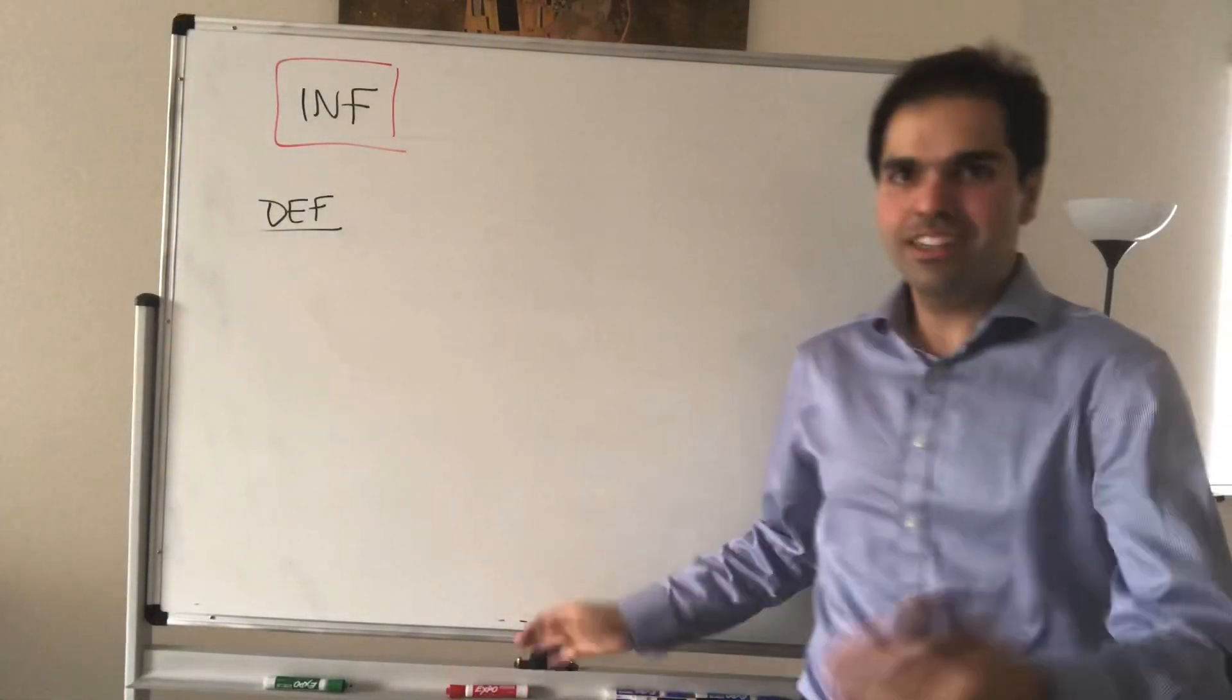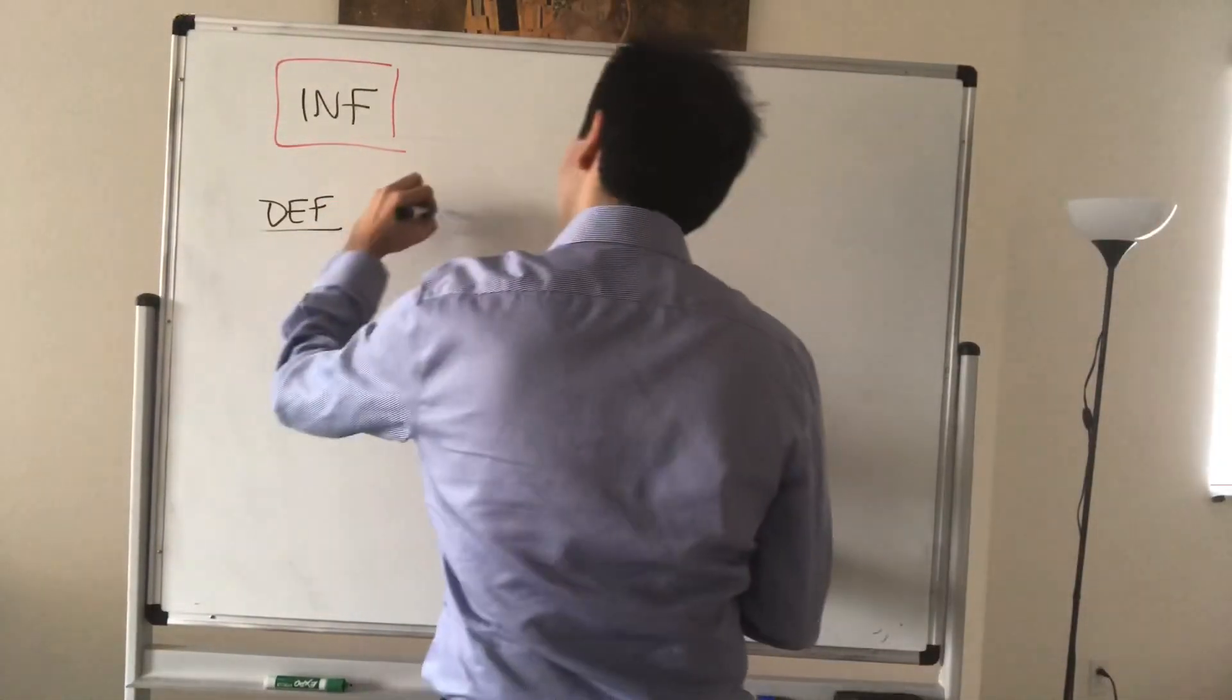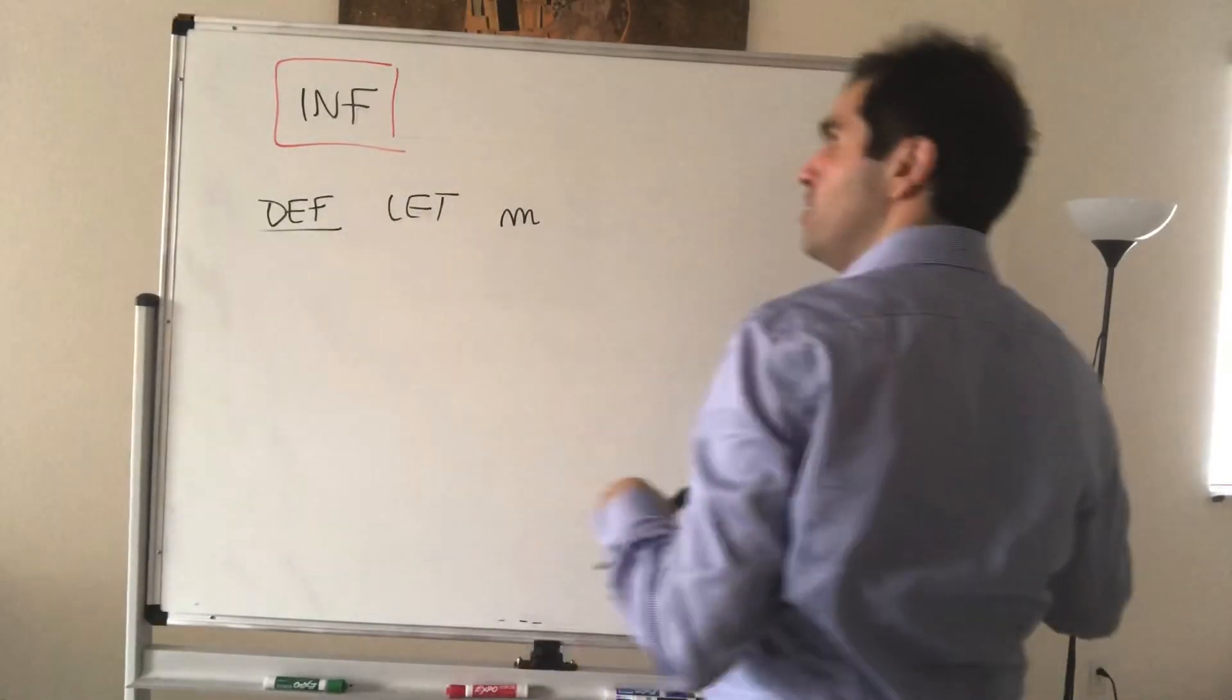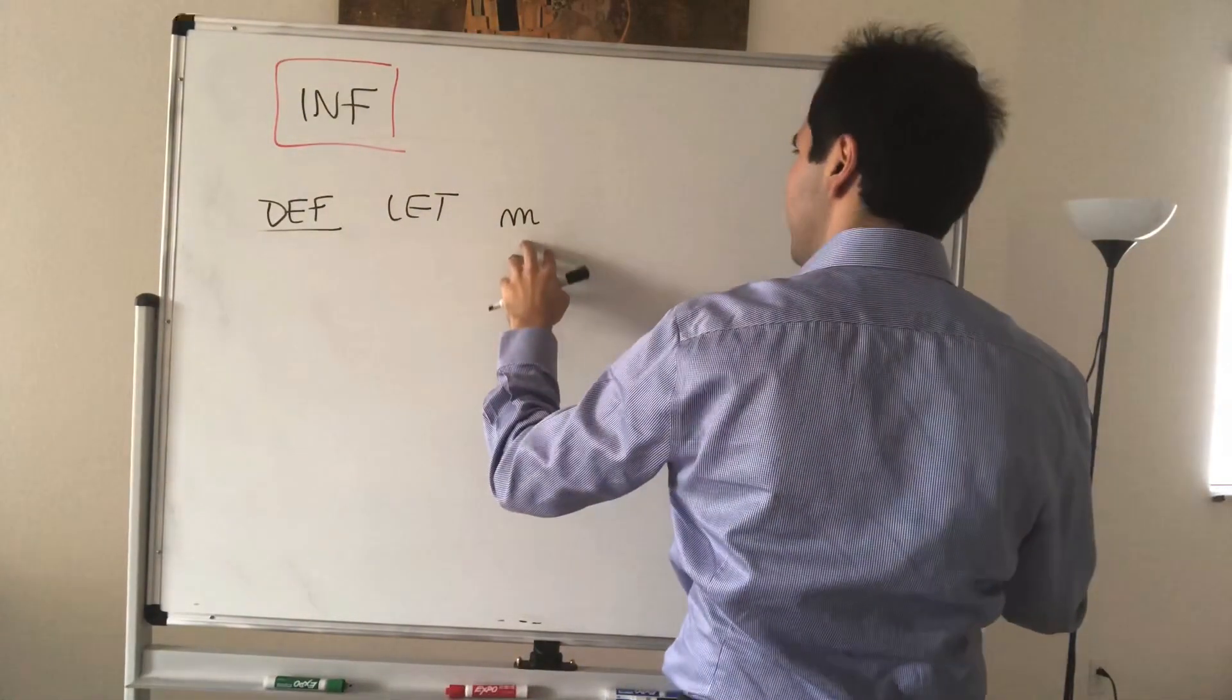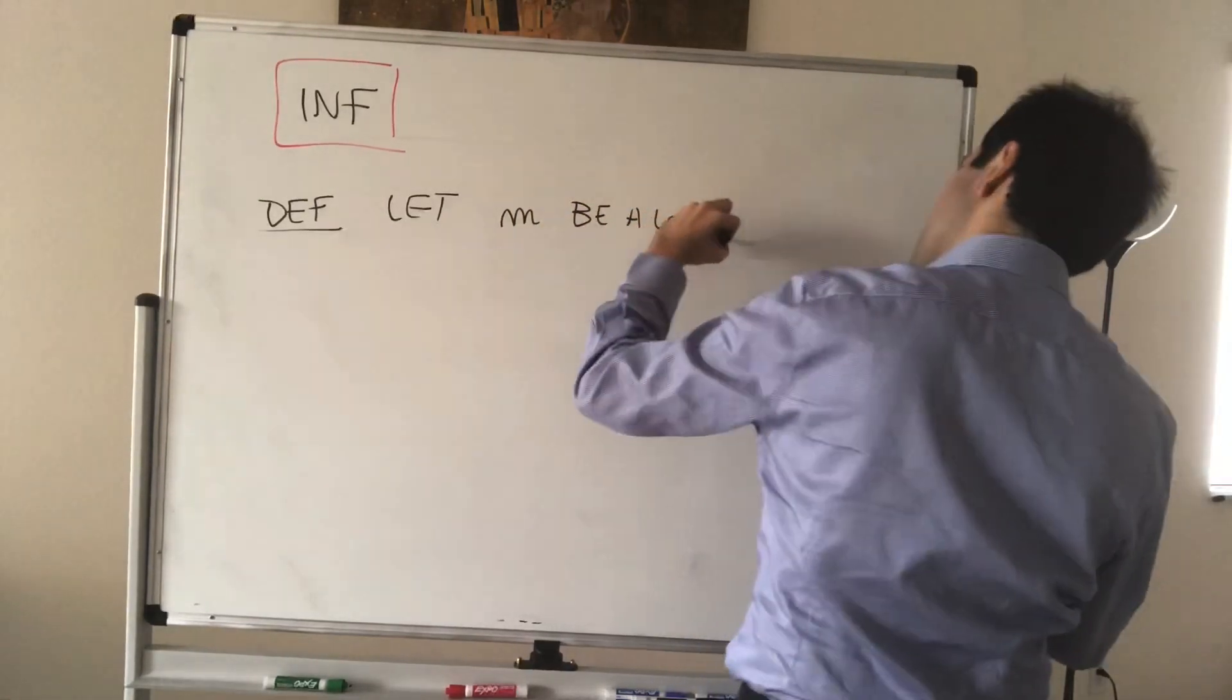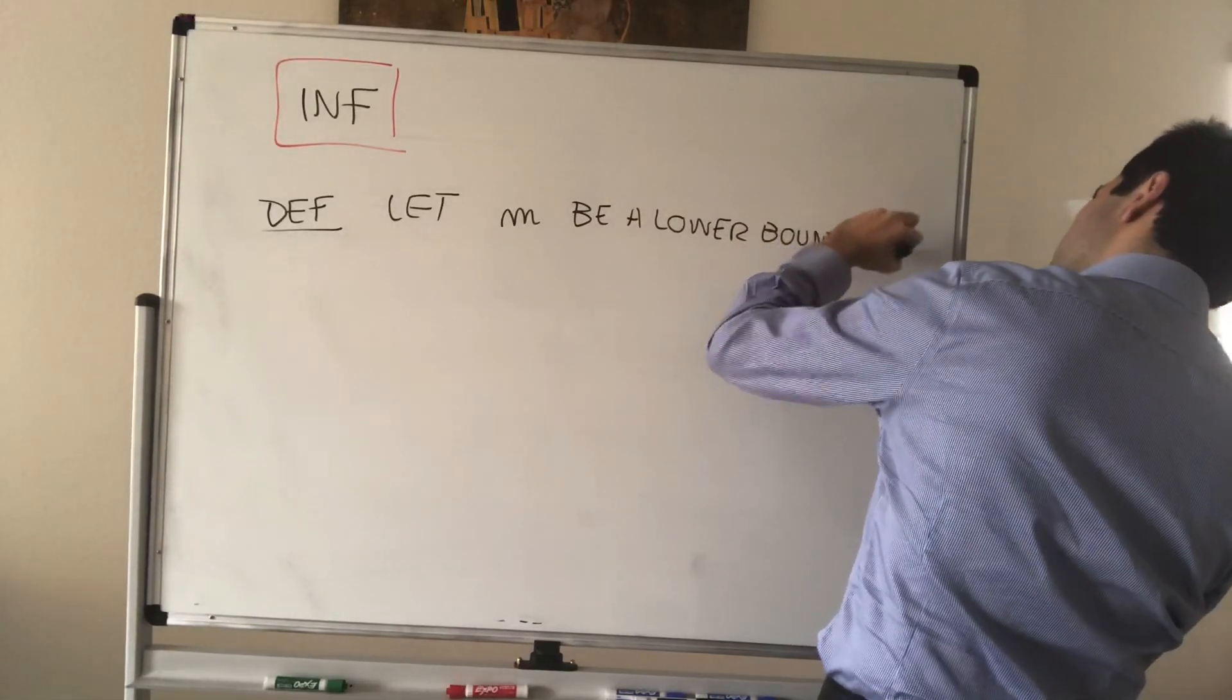It's kind of, I don't know if it's a happy or sad situation, but let, again, S be a non-empty subset of R, so let M be a lower bound for S.